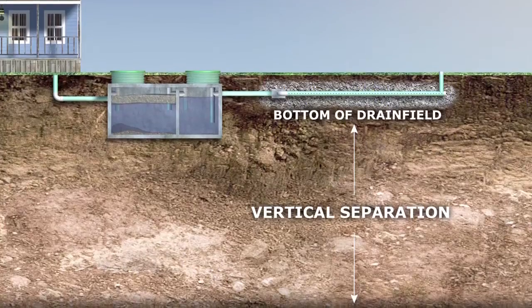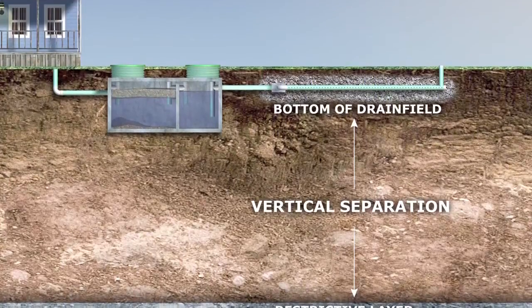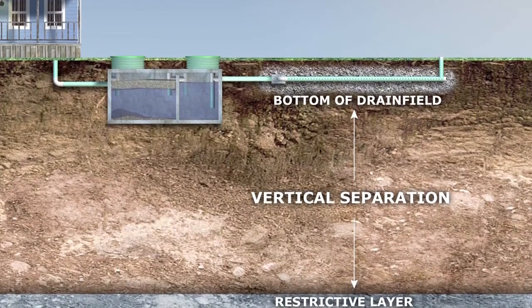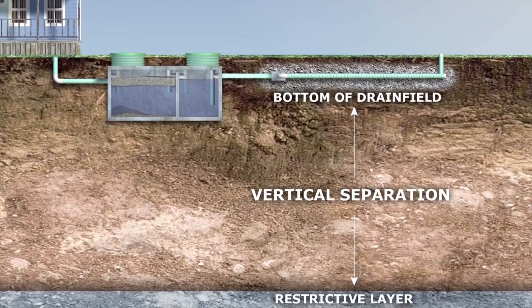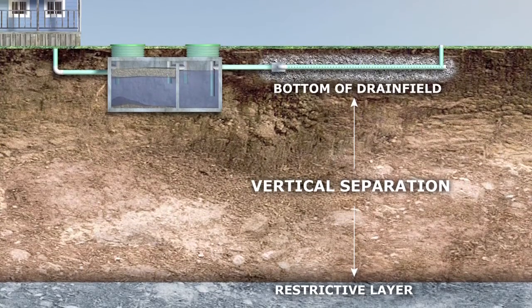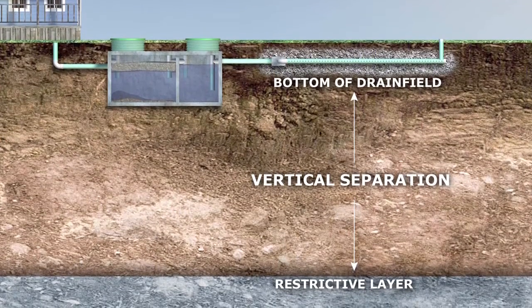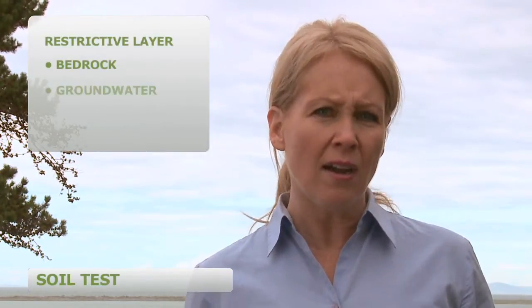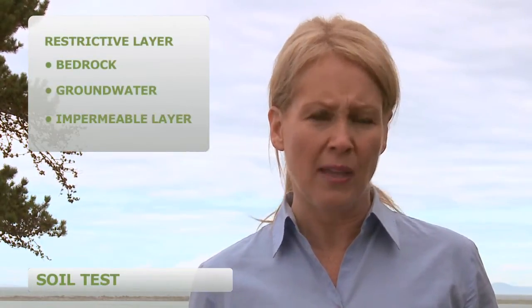In determining the type of system, the concept of vertical separation is very important. Vertical separation refers to the depth of soil on the property between the bottom of a drain field and the top of a restrictive layer of groundwater. You can think of this area of soil as the filter for pathogen removal. This distance will help determine the system type. A restrictive layer could be bedrock, groundwater, or an impermeable layer. It is the depth where water will no longer flow down through the soil and receive treatment.